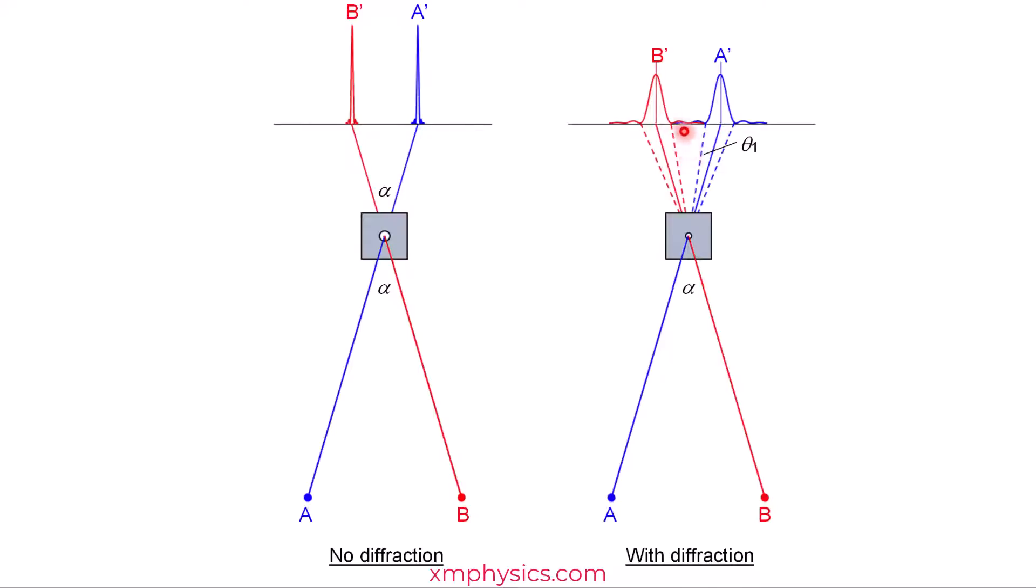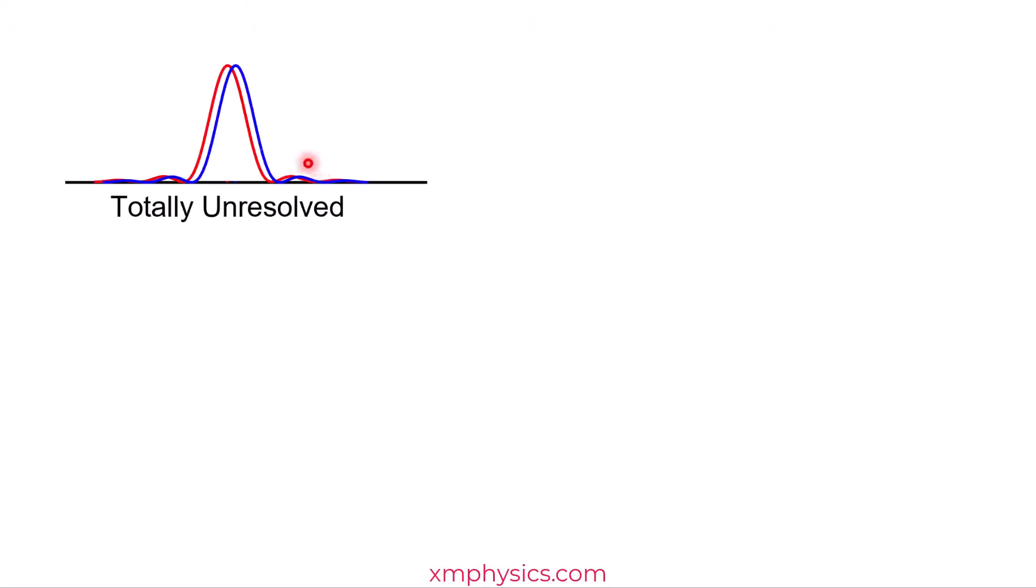So you can imagine if it's too spread out, the two images will overlap too much and become unresolvable. So if the two images are too close, like this, then everyone agrees that this is totally unresolvable. If the two images are spaced well apart, even though both of them are smeared, both of them are spread, they are still totally resolvable.